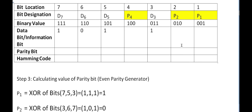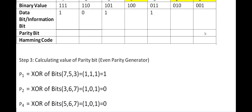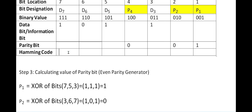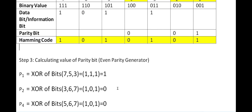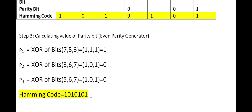Now we combine the data bits and parity bits according to their positions to form the final Hamming code. Position 7: data bit 1; position 6: data bit 0; position 5: data bit 1; position 4: parity bit P4 = 0; position 3: data bit 1; position 2: parity bit P2 = 0; position 1: parity bit P1 = 1. So the final 7-bit Hamming code is 1 0 1 0 1 0 1. Thank you all for watching.